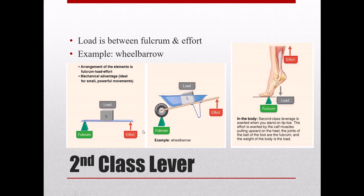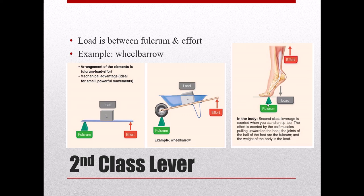Second-class levers are what you use when you use a wheelbarrow. The load is between the fulcrum and the effort — in the wheelbarrow, the fulcrum is the wheel, the load is what you're hauling, and your effort is at the end of the handles. These tend to have a mechanical advantage, giving strong but generally small movements. In the body, a good example is standing on your tiptoes: the fulcrum is the joints in the ball of the foot, the load is the weight of the body, and the effort is supplied by the calf muscles pulling from behind, lifting the load between the effort and fulcrum.